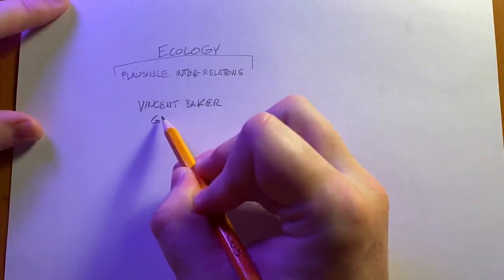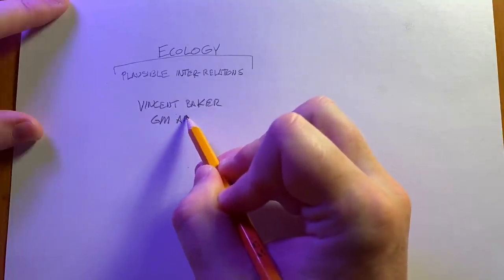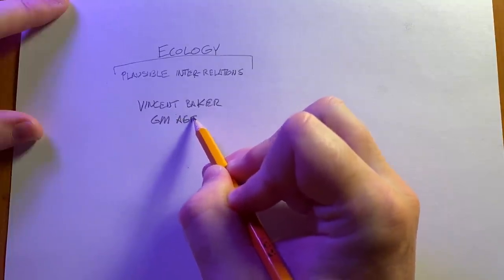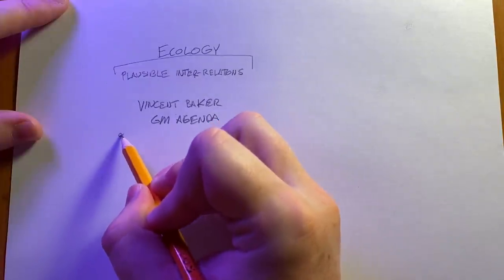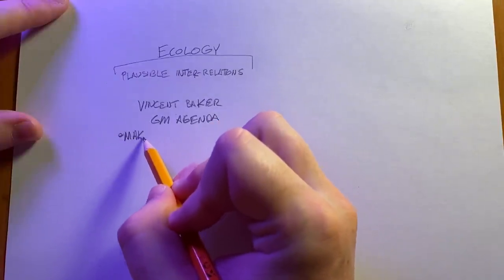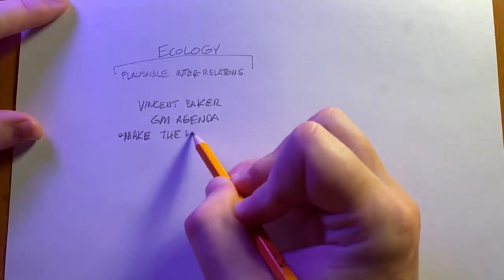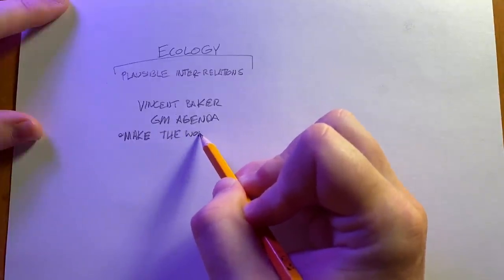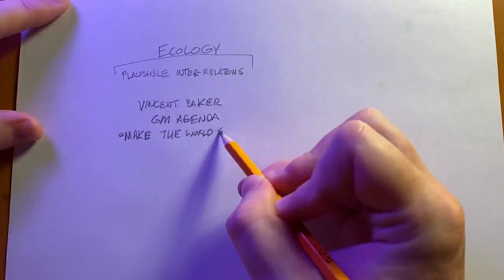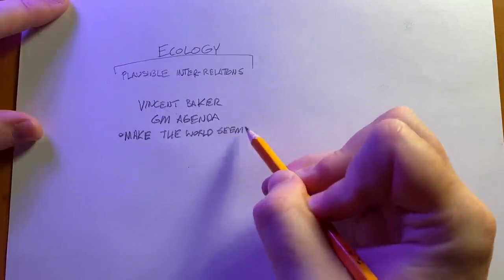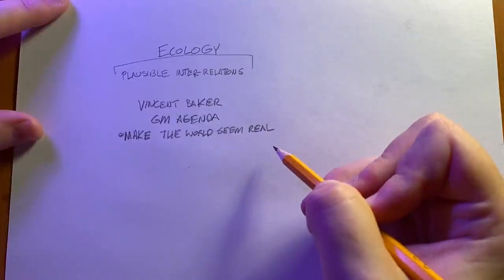A common example cited for bad dungeon ecology is if your final boss monster is an enormous dragon somehow contained in a room where there is no entrance or exit large enough to use. It just seemed to appear there, and at some point a player might find themselves scratching their head going, 'Wait a second, how is this thing even here?' — at which point you just kind of have to shrug your shoulders and say, 'I didn't think about it.'